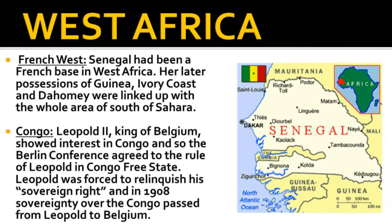West Africa: The coastal states of the Gold Coast became a British colony in 1854. Senegal had been a French base in West Africa; a later acquisition of Guinea, Ivory Coast, and Dahomey were linked up with the whole area south of the Sahara as French West Africa. Leopold II, King of Belgium, showed interest in Congo, and so the Berlin Conference agreed to the rule of Leopold in the Congo Free State. Leopold was forced to relinquish his sovereign rights, and in 1908 sovereignty over the Congo passed from Leopold to Belgium.